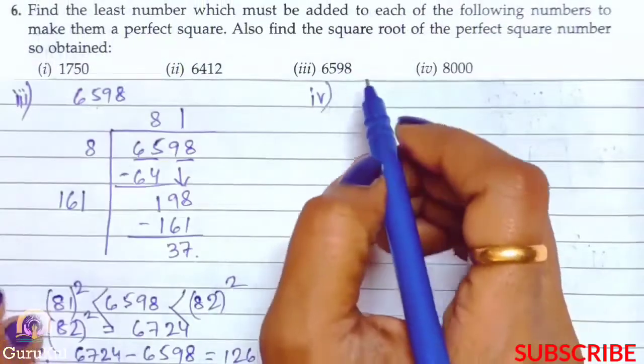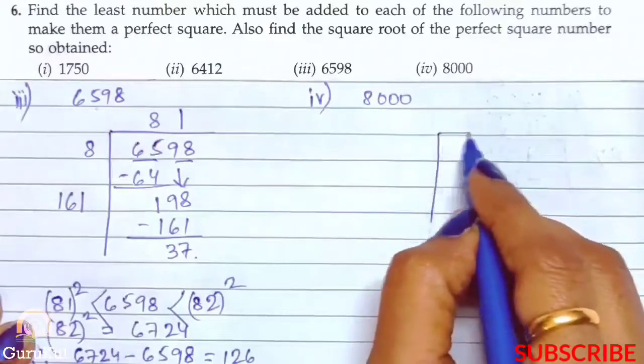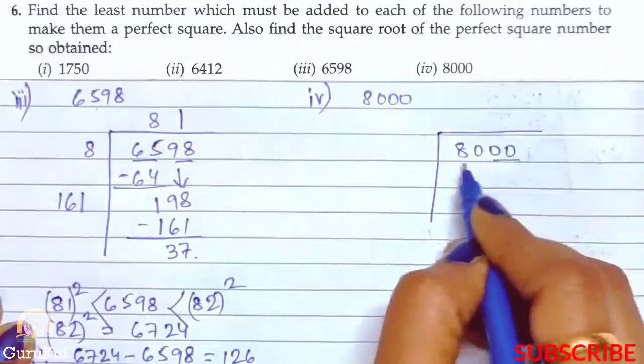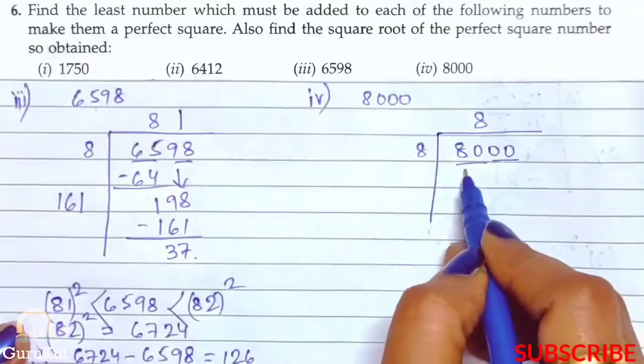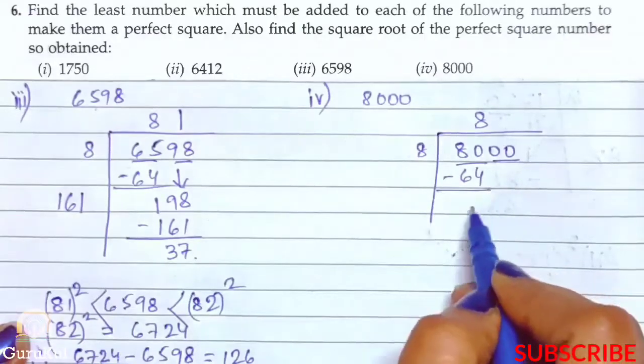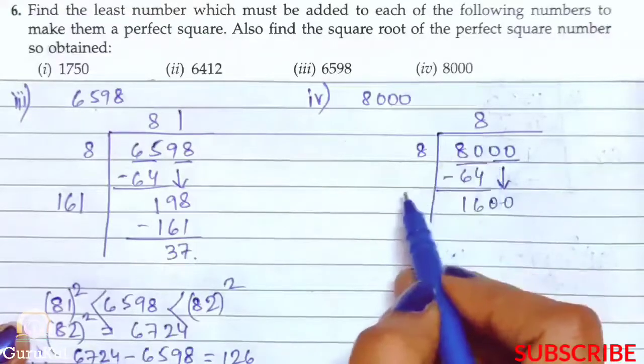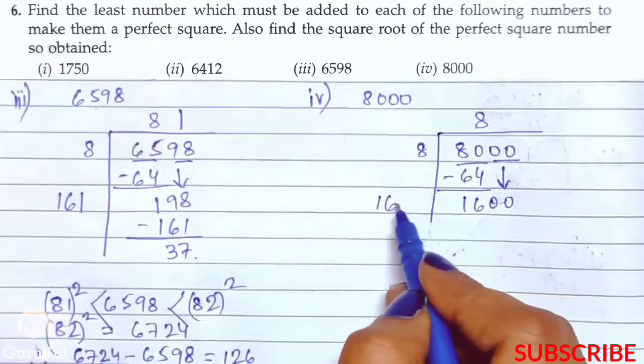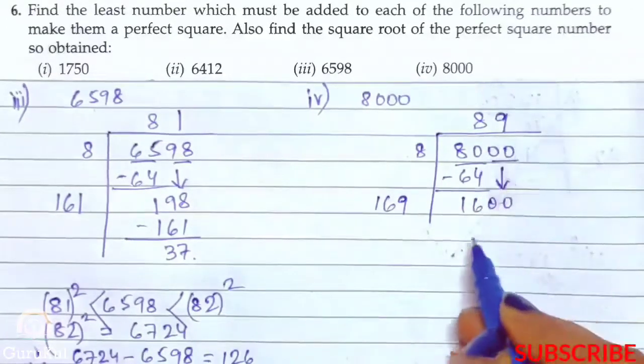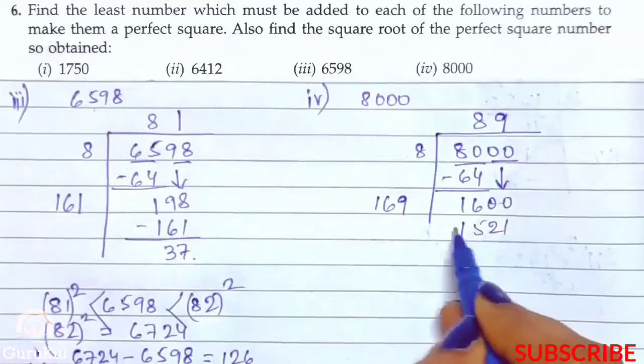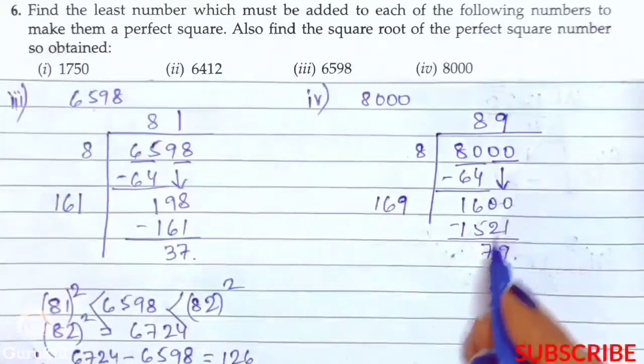Now the fourth sum of question number 6, it is 8000. So 8000, ye ho gaya 8. 8 eights are 64, remainder 16. We will bring down double 0. 8 ka double 16. So 169, vagal mein 9 likhe. So 169 into 9 gives us 1521, remainder 79. So 8000 is not a perfect square.